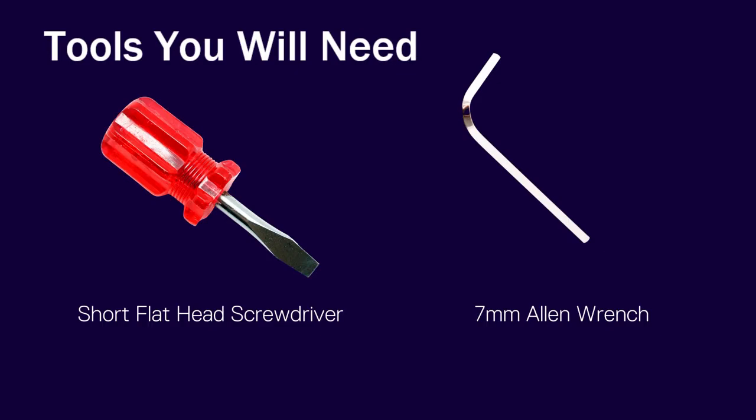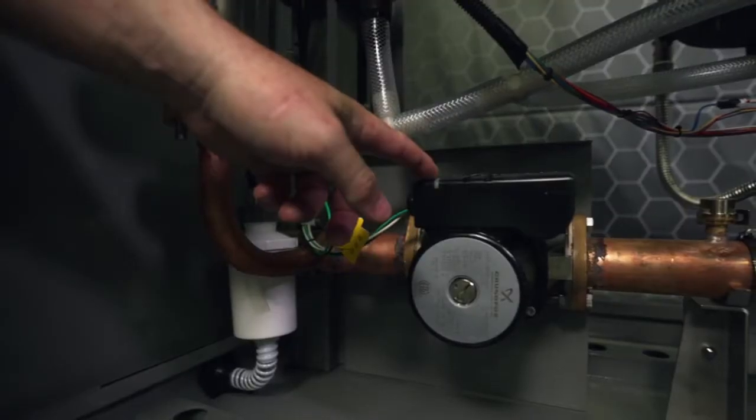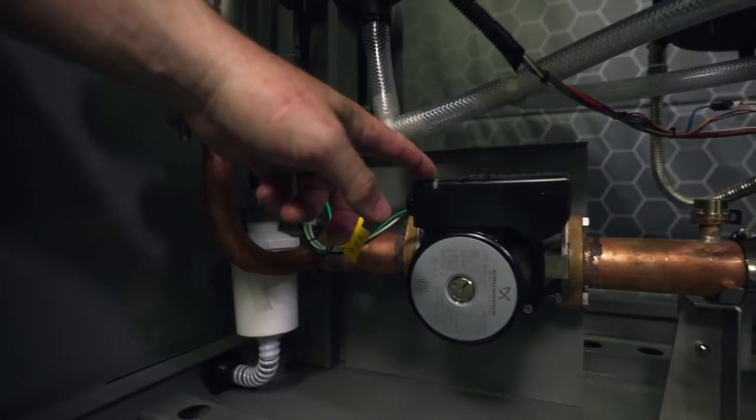You'll need a flathead screwdriver and a 7mm Allen wrench. The first thing you'll want to check is the green light on the pump.